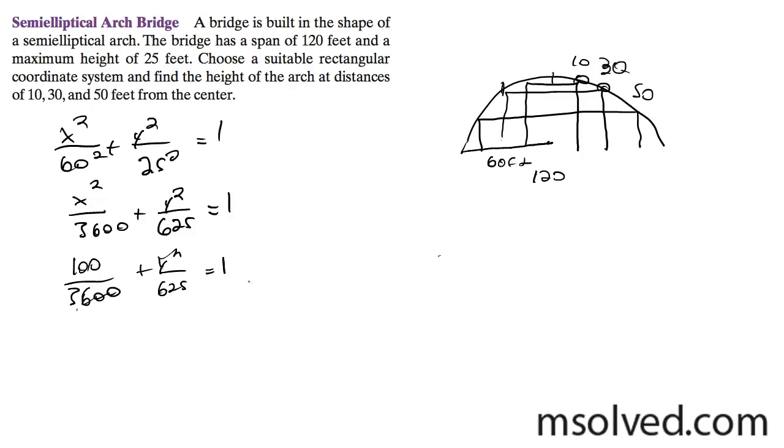So go ahead and subtract that from 1, and we get y squared over 625 is equal to 0.9722 repeating, times 625, get 607.638 repeating. And finally, take the square root of that, we get for 10 feet away, 24.65 feet.